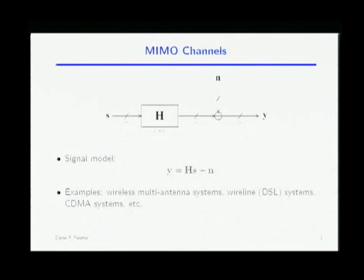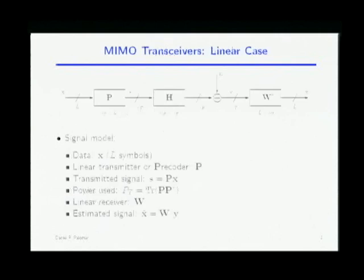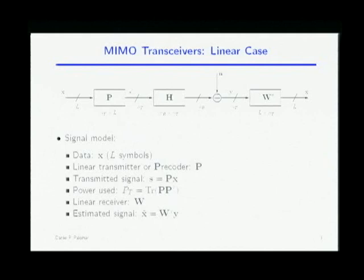A linear transceiver is some linear processing done at the transmitter and some linear processing done at the receiver. We include a matrix at the transmitter, which is like a linear precoder — I call it P as in precoder. And then another matrix at the receiver, it's like an equalizer. So X is a vector with symbols from some constellation — QAM, QPSK, whatever. I'm going to transmit L symbols through this channel. I precode this vector of symbols to get S, then transmit that. On the receiver, I process Y with the equalizer to get X-hat, an estimation of the transmitted vector.